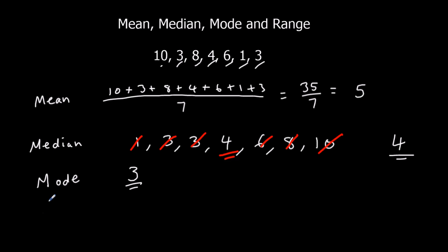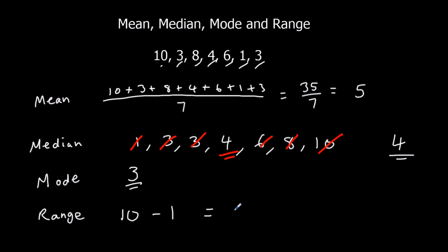And finally the range. The range is the biggest number take away the smallest number. The biggest number is 10, the smallest number is 1. So the range is 10 take away 1. 10 take away 1 is 9. So the range is 9.